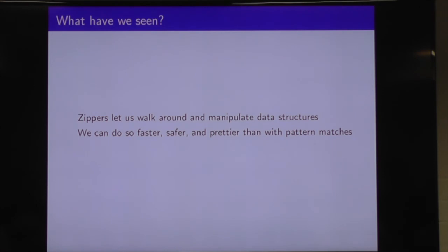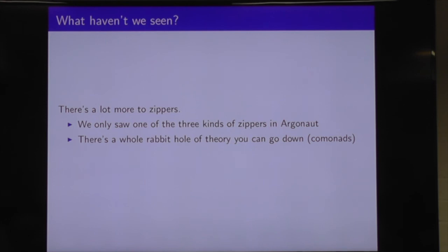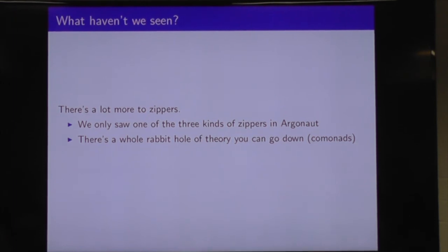What have we seen tonight? We've seen that zippers let us walk around and manipulate data structures. We can do it possibly faster, usually safer, and definitely prettier than with pattern matches. There's lots more to zippers — an entire universe of zipper theory out there. There are actually three different types of zippers in Argonaut, and I only showed you one of them. And it turns out that every zipper gives rise to a comonad or something like that — Dave can tell you all about that, but I can't. And that's the end of the talk.